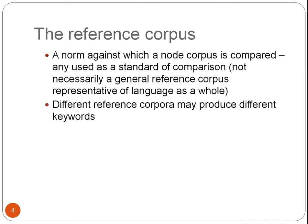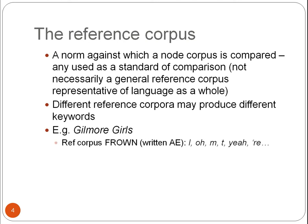An important issue to consider when interpreting keywords is the contents of the reference corpus, because different reference corpora may produce different keywords. For example, when I compare a corpus of dialogue from the TV series Gilmore Girls with the FROWN corpus, which consists of written American English, I get different keywords than when I compare it to a corpus of dialogue from other TV series.